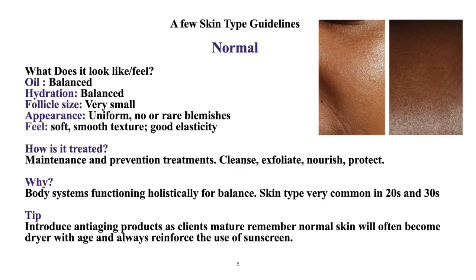Let's move on to skin type guidelines, starting with normal skin. What does it look like and how does it feel? Oil production is very balanced. Normal skin has balanced oil, balanced hydration, and follicle size is usually very small. Its appearance is very uniform — no or very rare blemishes. It feels soft, smooth, and usually has good elasticity. Normal skin needs maintenance and prevention with treatments, including cleansing, exfoliating, nourishing, and protecting the skin, because body systems are functioning holistically for balance.